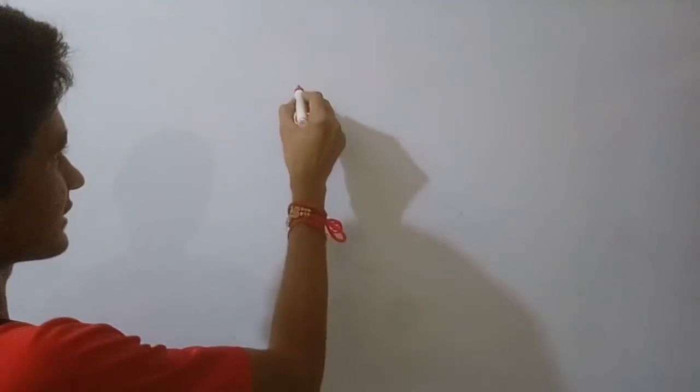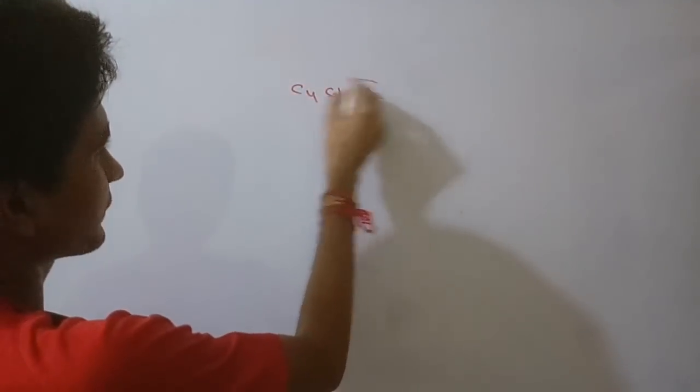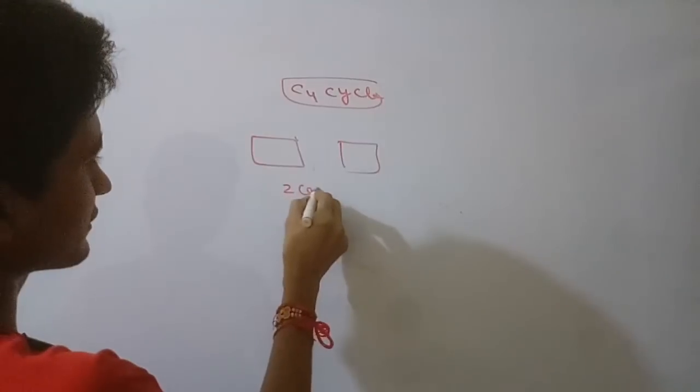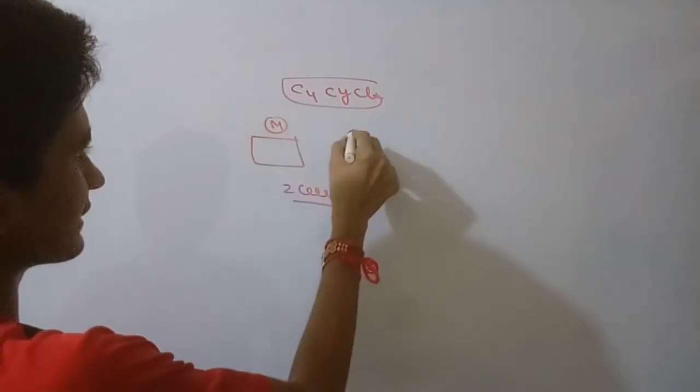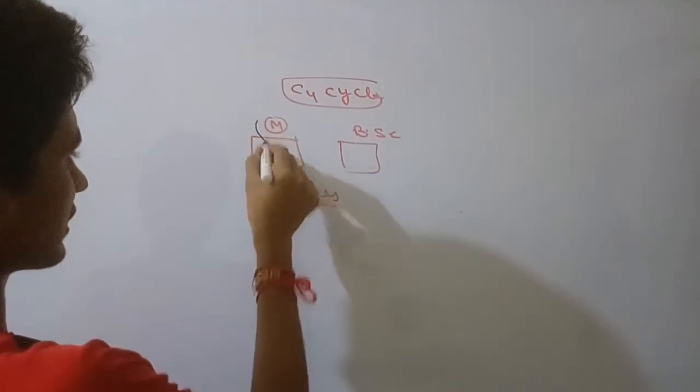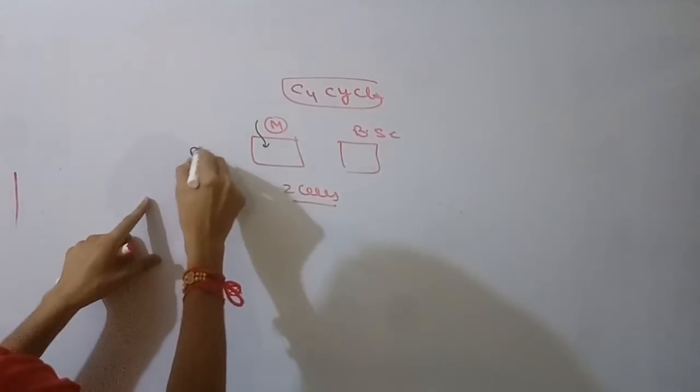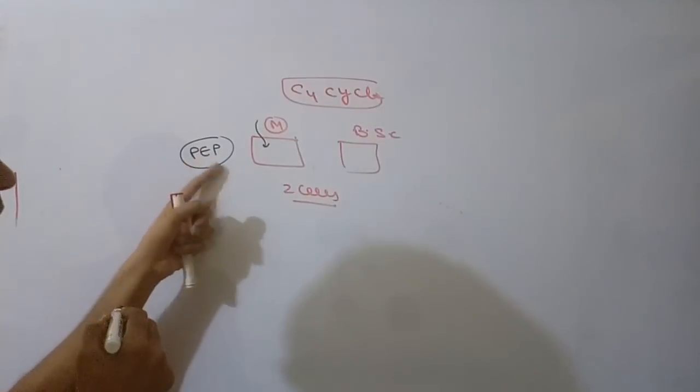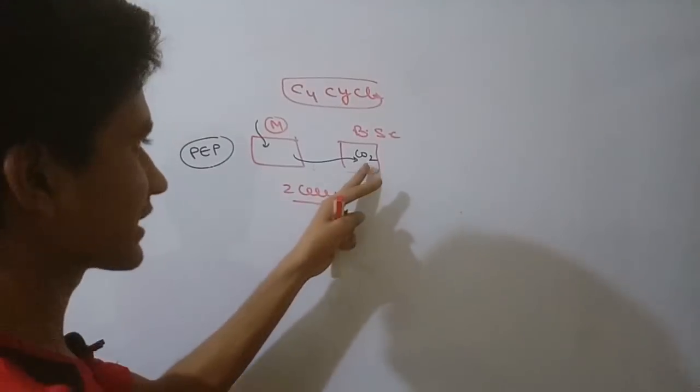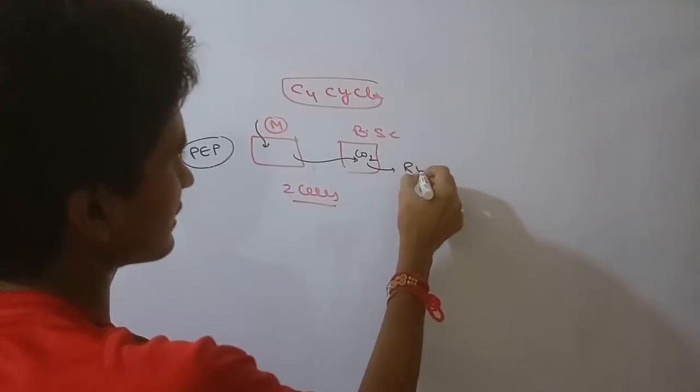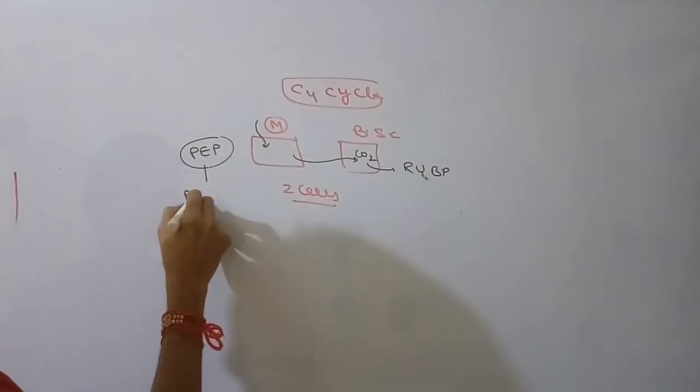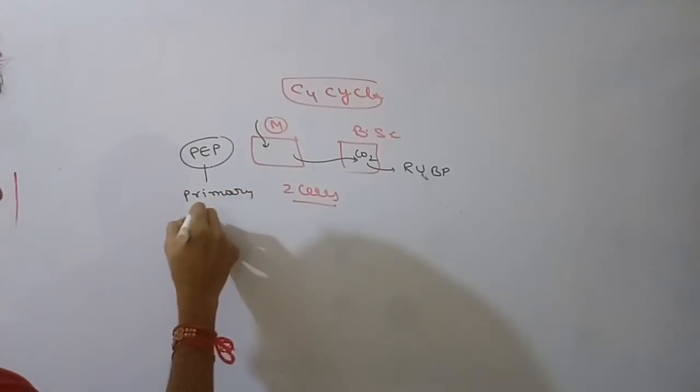In C4 plants, C4 cycle was discussed. There are two different cells: mesophyll cell and bundle sheath cell. CO2 fixation happens through RuBisCO. The primary acceptor is PEP. The C4 cycle is the universal one. The primary acceptor concept shows that the secondary acceptor is in bundle sheath cells.